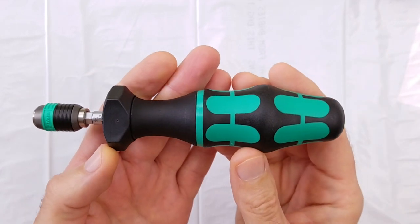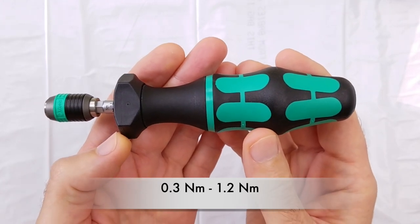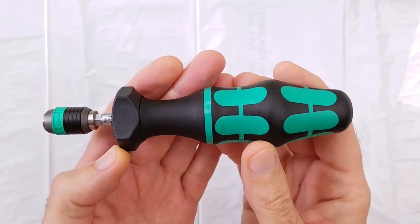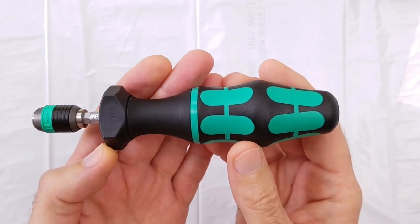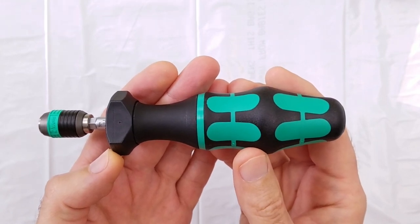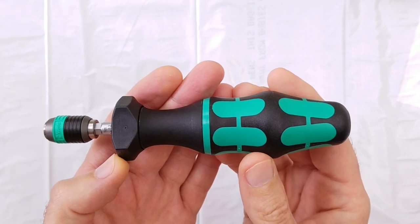This particular one I have here covers a torque range of 0.3 Nm to 1.2 Nm. And that's a torque range which is appropriate for screws in the range of M2 to M3, i.e. a 2mm to 3mm thread size.